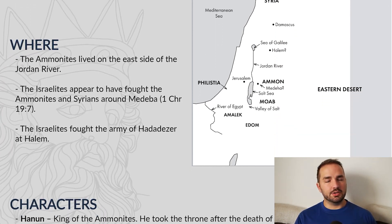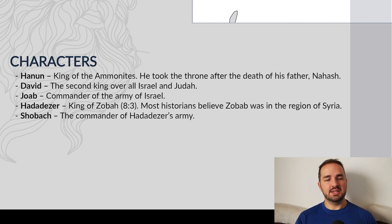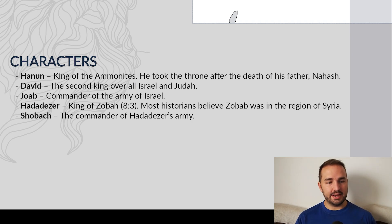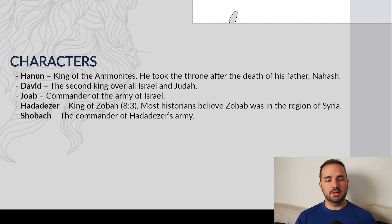Who are the key characters of chapter 10? First we have a guy named Hanun, king of the Ammonites — he took the throne after the death of his father Nahash. We've got David, who of course we know by now. Joab, the commander of David's army. Then a guy named Hadad Ezer, king of Zobah. And then a guy named Shobak, the commander of Hadad Ezer's army.